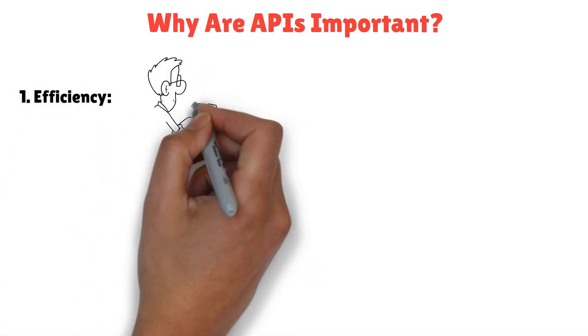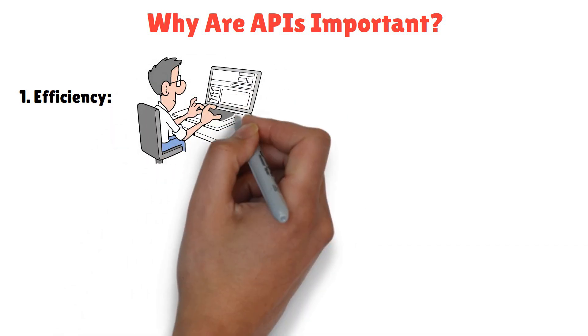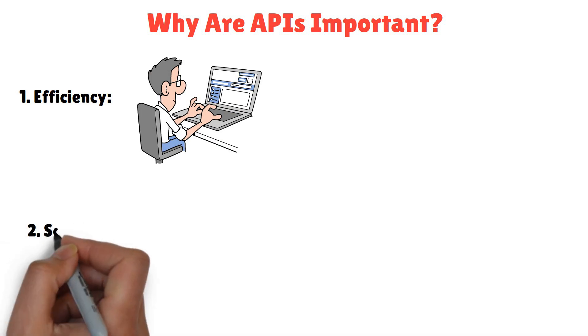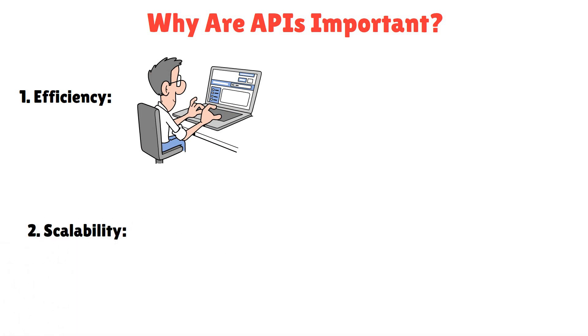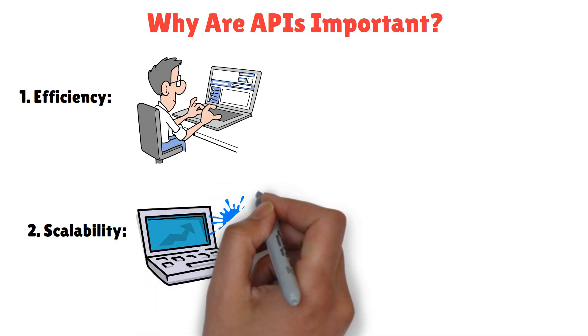Efficiency. APIs save time by letting developers use existing services instead of building everything from scratch. Scalability. They enable systems to grow by plugging in new features or services.